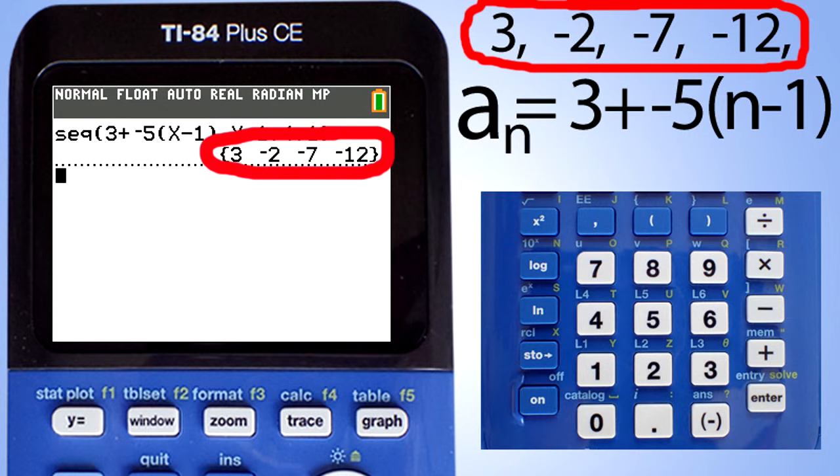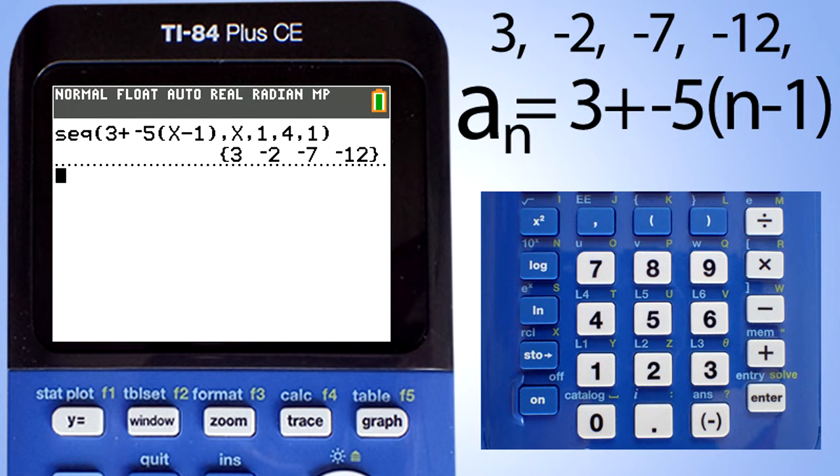And there is our answer. Our equation is correct because it matches our sequence. Okay, that is it. That is how to work with arithmetic sequences on the TI-84 plus CE graphing calculator. If you like this video, please give it a thumbs up and please subscribe to this channel.